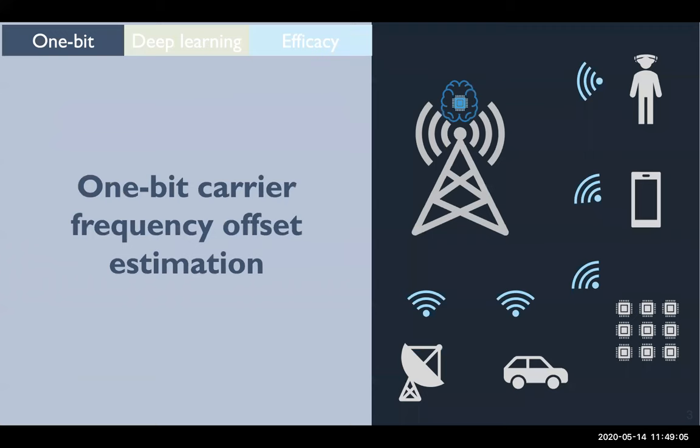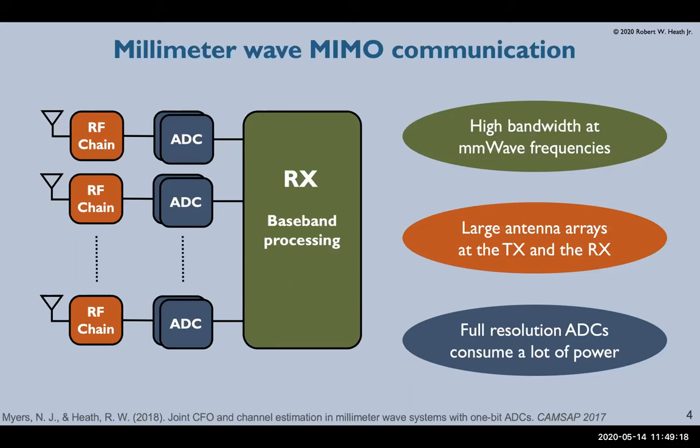So now let's take a look at the 1-bit carrier frequency offset estimation problem. To motivate this, let's consider a millimeter wave MIMO communication system. In this framework there's a wide spectrum of unused bandwidth allowing for very high data rates. But due to the high loss at millimeter wave carrier frequencies both the transmitter and receiver have antenna arrays which help overcome low signal to noise ratio.